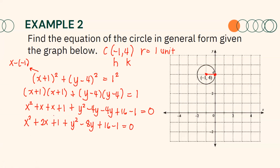Combining the constant terms: positive 1 plus 16 minus 1 equals 16. Rearranging in general form: X squared plus Y squared plus 2X minus 8Y plus 16 equals 0. This is your equation in general form.